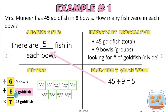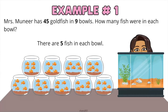Let's go ahead and fill in our each. You could go ahead and draw 5 objects in each square — I went ahead and drew stars. Our answer is: there are 5 fish in each bowl.